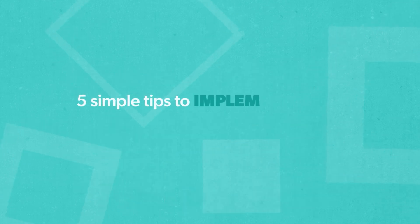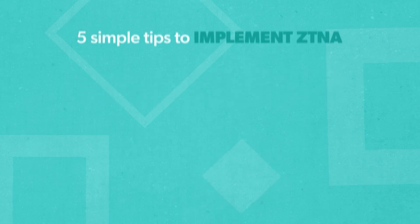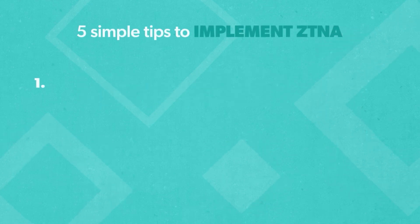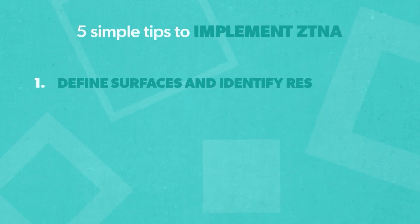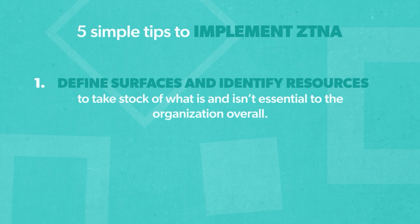Here's how to implement ZTNA in five simple tips. One: define surfaces and identify resources to take stock of what is and isn't essential to the organization overall.